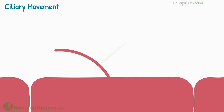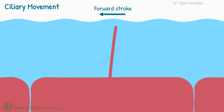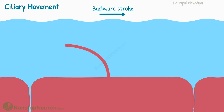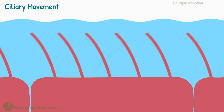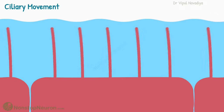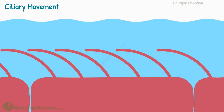Now let's talk about ciliary movement. Cilia move in a whip-like motion. There are two parts to each stroke. The forward stroke is a rapid forward thrusting movement that pushes the fluid on the cell surface in a forward direction. Then comes a backward stroke, which is a slow, dragging movement that produces almost no effect on fluid movement — at the end of it, the cilia return to their starting position. This movement is repeated again and again, and collectively all cilia on the cell surface move the fluid in the direction of the forward stroke.